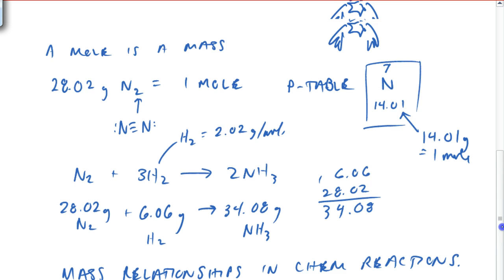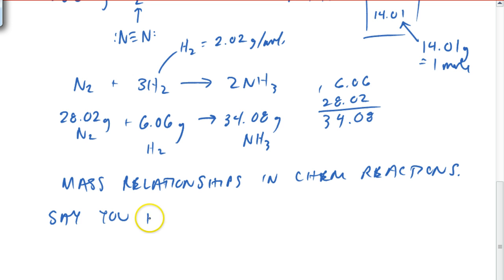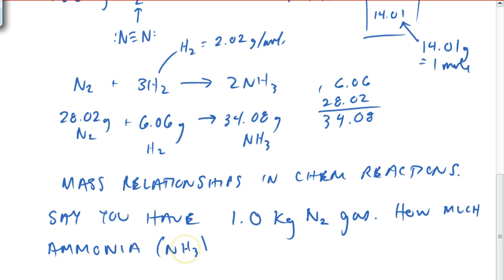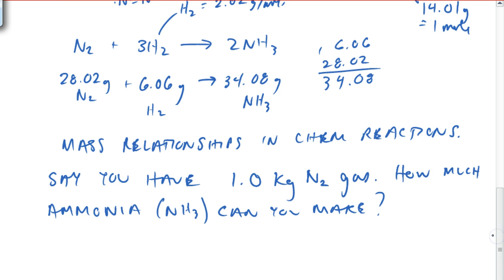Alright, now let's look at a problem then that we could deal with, that we could do with this. Let's say you have—I'm not going to keep you long now, I'm almost done—let's say you have one kilogram of nitrogen gas. How much ammonia, NH3, can you make?